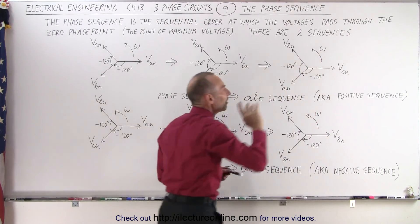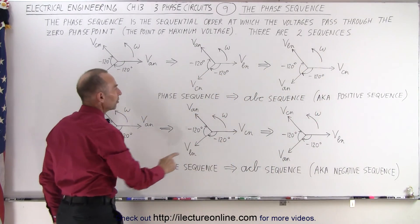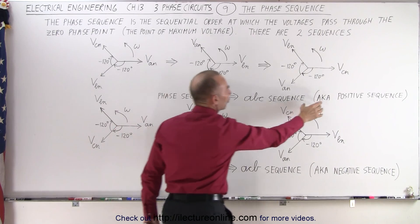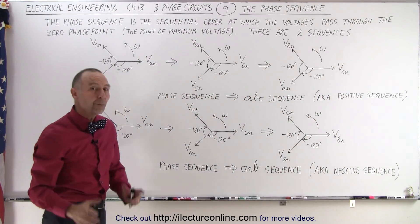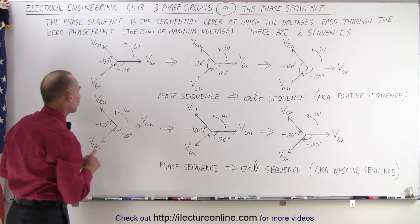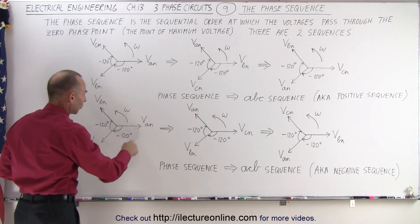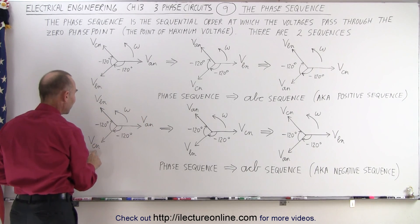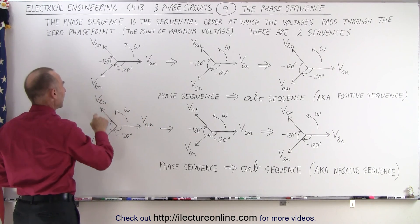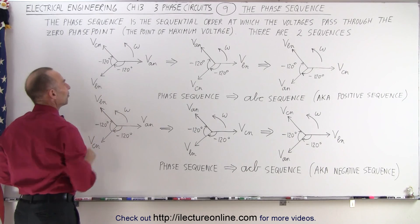So this kind of phase sequence is considered an ABC sequence, and it's also known as the positive sequence. But we could have things wired differently in such a way that our phase diagram looks like this. We have VA sub N over here. Over here we have VC sub N instead of B sub N, and B sub N is up here instead of C sub N.